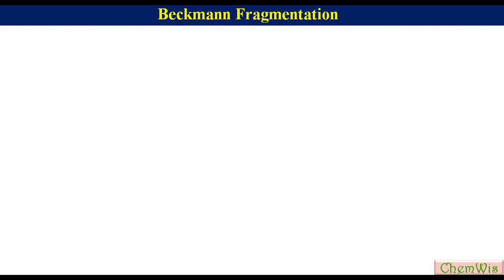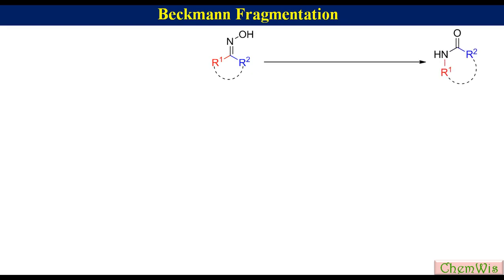We have learned in the previous lecture that an oxime is converted to amide or lactam when treated with protic acid, Lewis acid, or a reagent that can convert a hydroxyl group into a better leaving group.